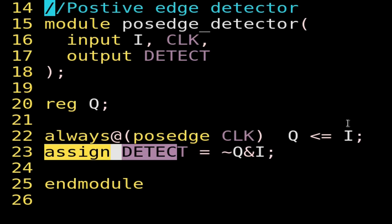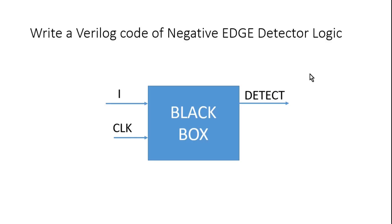Now let us move towards the next question. This is the last question of this video, where you have to write a Verilog code of a negative edge detector. The behavior of a negative edge detector is: whenever i varies from 1 to 0 — that is called a negative edge — the detect pulse should go high for one clock cycle, otherwise it should remain zero. Even if there is a positive edge on input i, the detect should remain zero only.